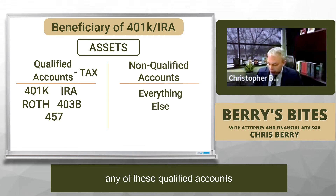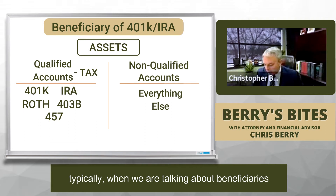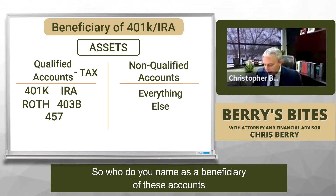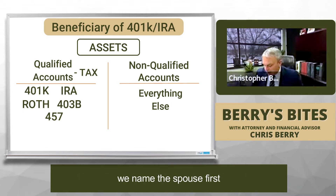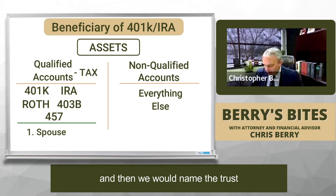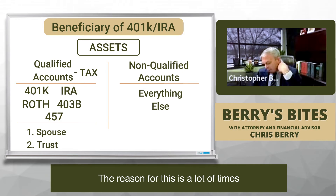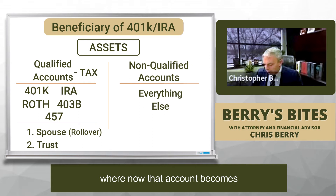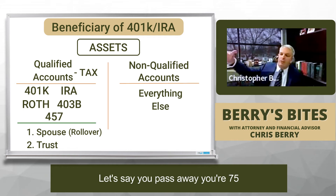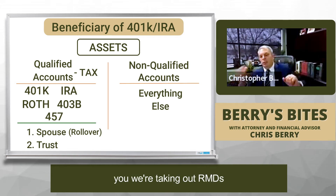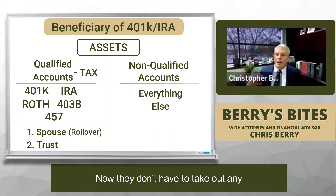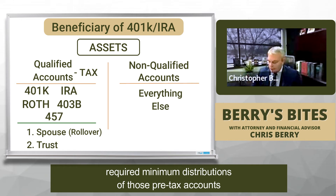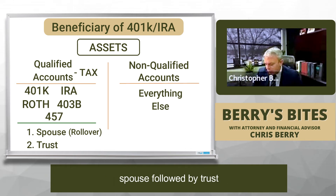The way it works is, with any of these qualified accounts, typically when we're talking about beneficiaries — who do you name? — we name the spouse first, and then we would name the trust as the contingent beneficiary. The reason for this is the spouse can do what's called a spousal rollover. Let's say you pass away at 75 and your spouse is 67; you were taking RMDs, but now the spouse inherits the account and doesn't have to take required minimum distributions on those pre-tax accounts. So a majority of the time we name spouse followed by trust as beneficiaries of qualified accounts.